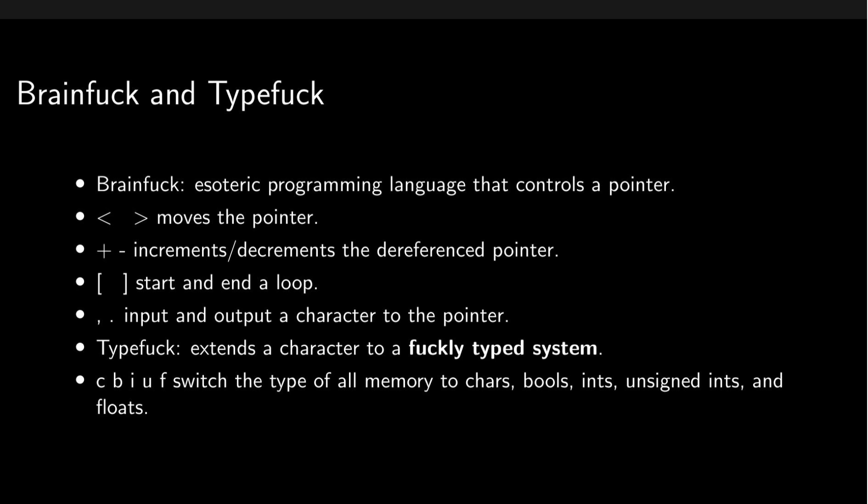In this example, the first instruction, C, says that we are using character mode. The next instruction, comma, takes an input — say the character three — and places it at that address. I then switches TypeFuck to integer mode, and the period will output a 51.